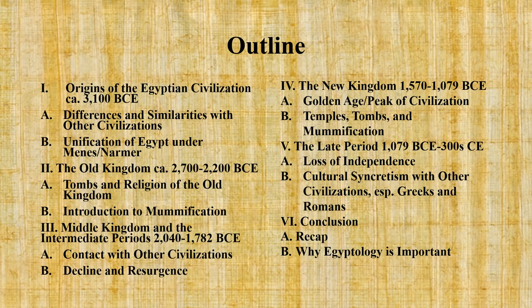We'll discuss the origins of the Egyptian civilization starting around 3100 BCE and some of its similarities and differences with other contemporary civilizations. Then we'll discuss the Old Kingdom from about 2700 to 2200 BCE, which was the period of the pyramids. We'll also discuss the introduction of artificial mummification in ancient Egyptian society. After that, we'll discuss the Middle Kingdom and the intermediate periods and how the Egyptian civilization came into increased conflict with other civilizations and empires in the region.